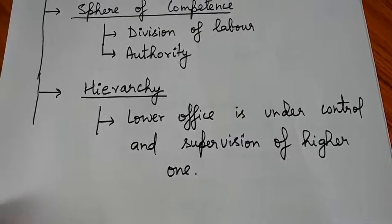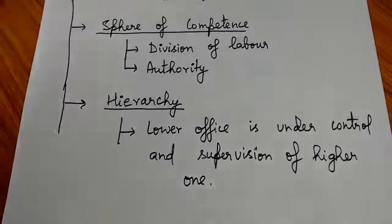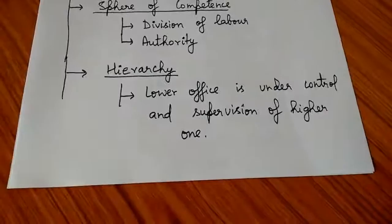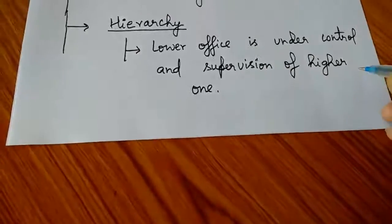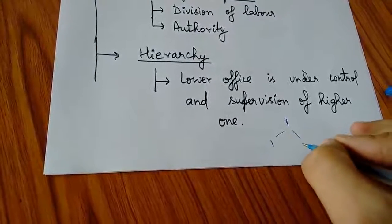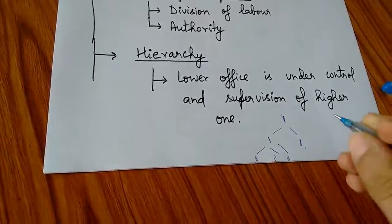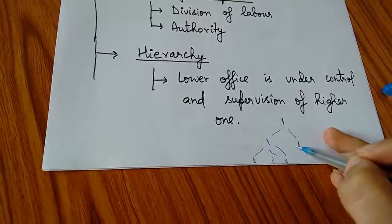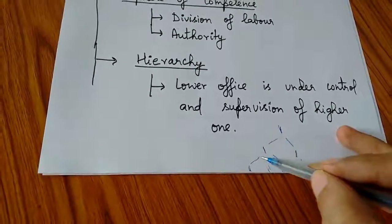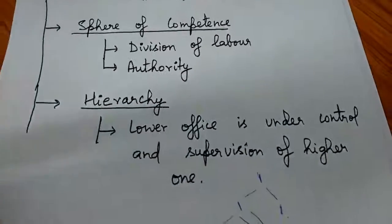The fourth characteristic is hierarchy — lower offices are under the control and supervision of higher ones. There is a systematic line of command: the top official has persons working under him, those persons have others below them, and so on. Each official reports to the one above. This is one of the most important concepts in Weber's bureaucratic model.